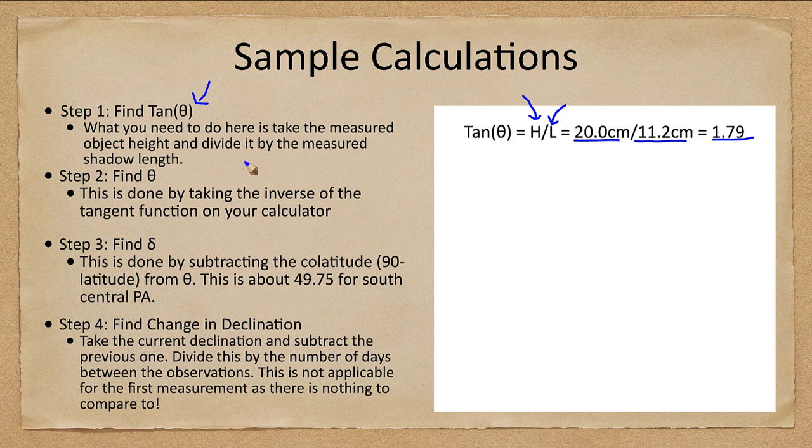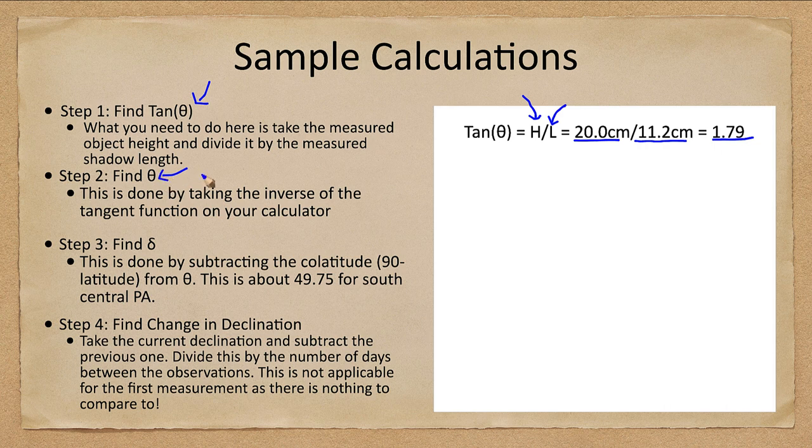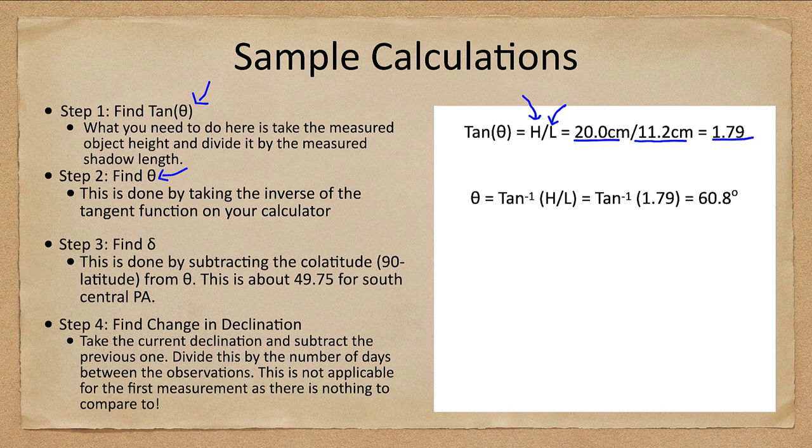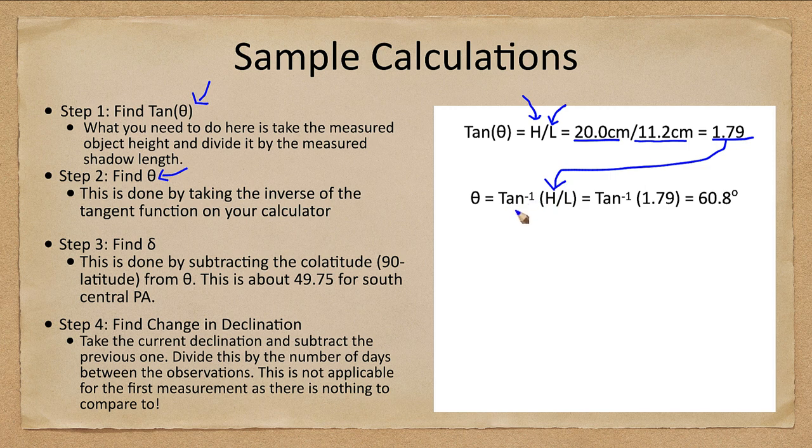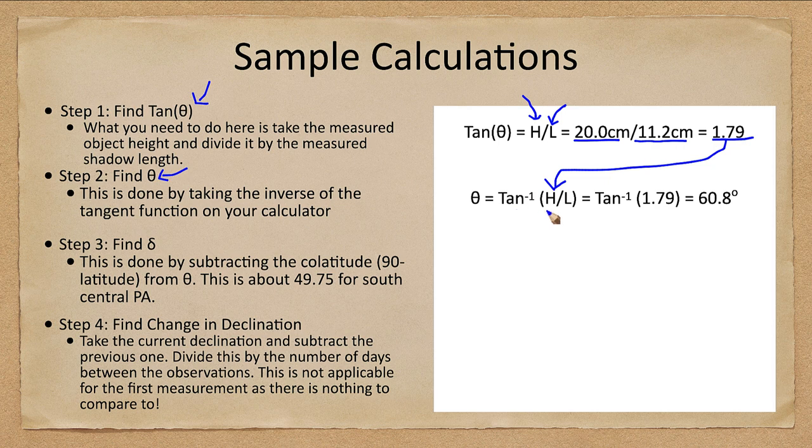For the second step, we want to find theta. Theta is the altitude of the sun. In order to find that, we need to use the inverse tangent function on the calculator. You're going to take the number that you had here, this 1.79, and then you'll need to do inverse tangent or second function tangent on your calculator. If you do that, you will get for this number 60.8 degrees.